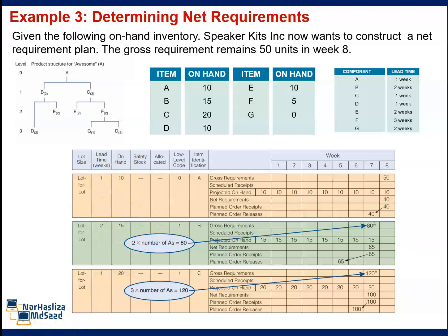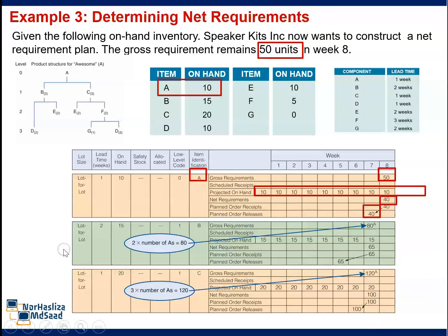The gross requirement for A is 50 units in week 8. The letter superscript A to the right of the gross figure for items B and C was generated as a result of the demand for the parent A. Performing the same type of analysis for B and C yields the net requirements for D, E, F, and G.